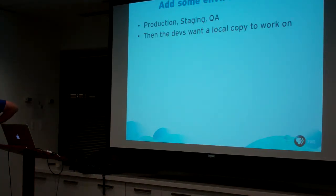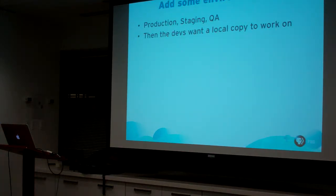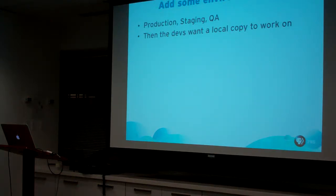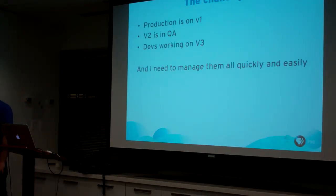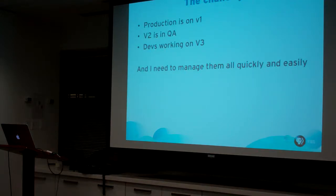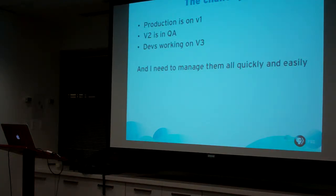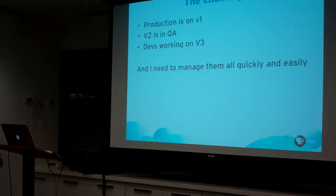Not only that, you have multiple environments. You have a production environment, a staging environment where you work with stakeholders, QA has to test new stuff, and all the devs want their own personal environment — otherwise they're just saying 'it works on my laptop' and shipping to production. So you end up with V1 in production, Elasticsearch in QA, and you need to manage that production bug back in V1 so you can develop and test before it goes to production.